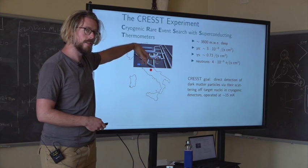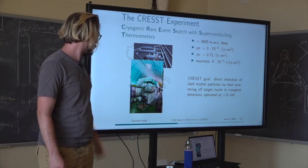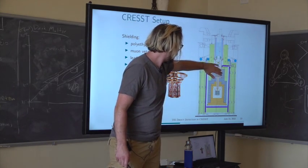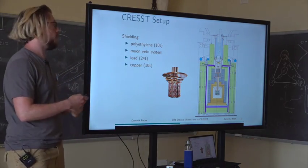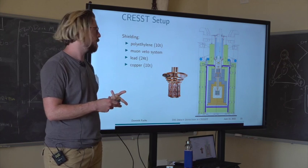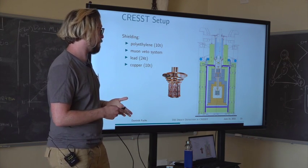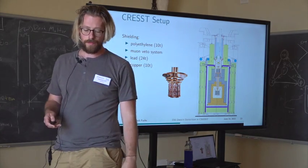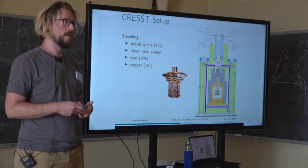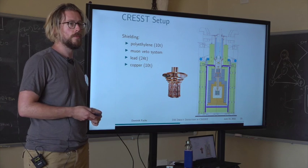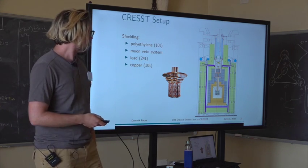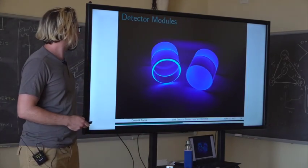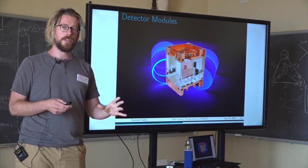Here's a picture of the halls inside the mountain and the CRESST setup — this is what it looks like from outside, and inside these containers we have our cryostat. We have several tons of polyethylene around, an active muon veto system, 24 tons of lead, 10 tons of copper, and another inner layer of polyethylene to help against neutrons induced by residual muons. In the middle we have what we call the carousel, which holds our detector modules.